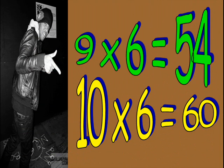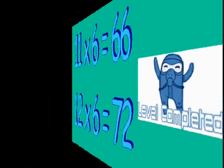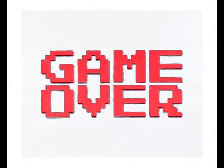Nine sixes are fifty-four. For ten times, just add six more. Sixty-six and seventy-two. Complete the six times tables for you.